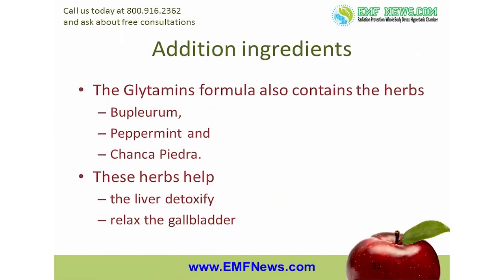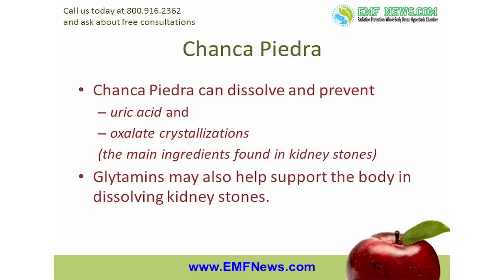Gleitamins suppositories contain glycine, taurine, and phosphatidylcholine to help support the body in both dissolving biliary sludge and gallstones as well as preventing them from recurring. The formula also contains the herbs bupleurum, peppermint, and chanca piedra. These herbs are used to further help the liver detoxify and to help relax the gallbladder so that as the bile begins to flow, stones can pass out more easily. Scientific studies have shown that chanca piedra can both dissolve and prevent uric acid and oxalate crystallizations. Since these are the main ingredients found in kidney stones, Gleitamins may help support the body in dissolving kidney stones as well.